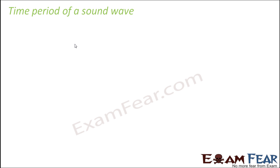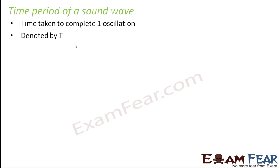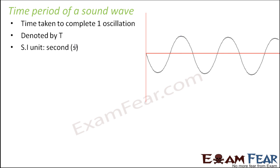Now, what is time period? It is the time taken to complete one oscillation. If you start counting from a certain point, the time taken from here to here — completing one full oscillation — is called the time period. Since it measures time, its SI unit is seconds.